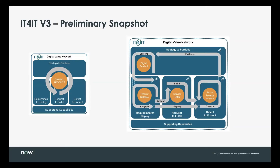I wanted to talk about IT4IT version 3 as a preliminary snapshot because version 3 has not been released yet. We're looking at releasing IT4IT version 3 in late 2021. The change in IT4IT from version 2.1 is really centered around digital product in version 3. Here we're dealing with a digital value network as the extended integration between all of these different value streams. The value streams — strategy, portfolio, requirement to deploy, request to fulfill, and detect to correct — start to migrate into a capability definition in this version.